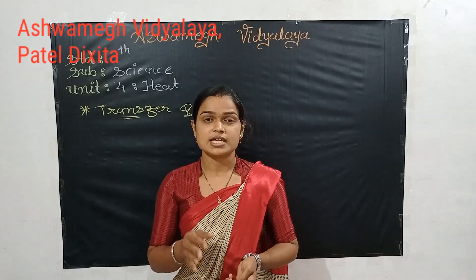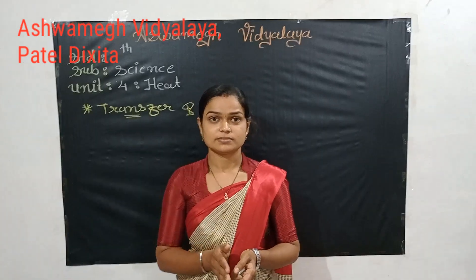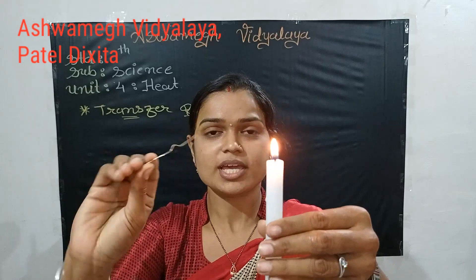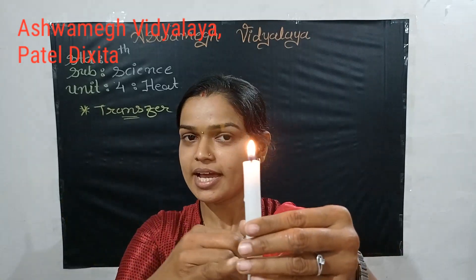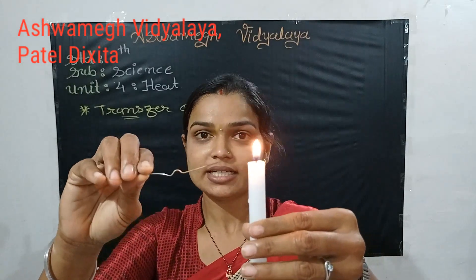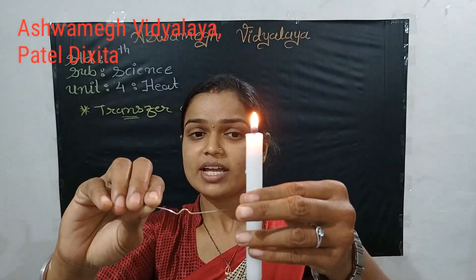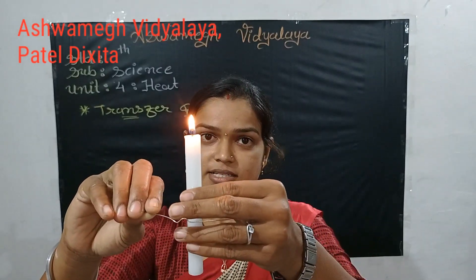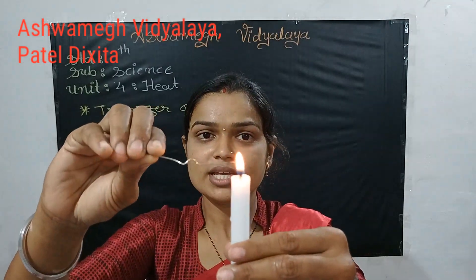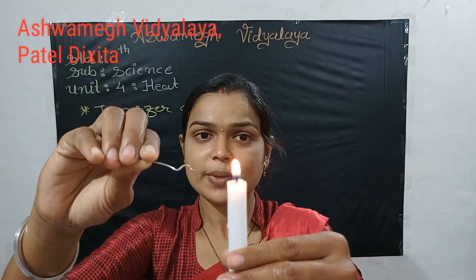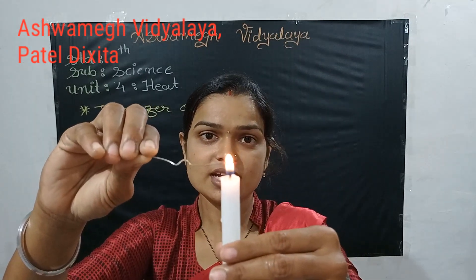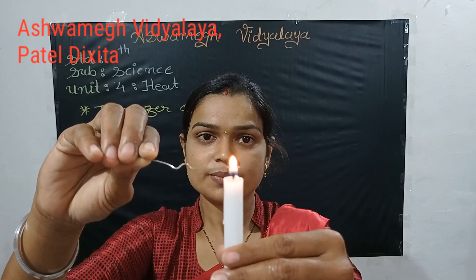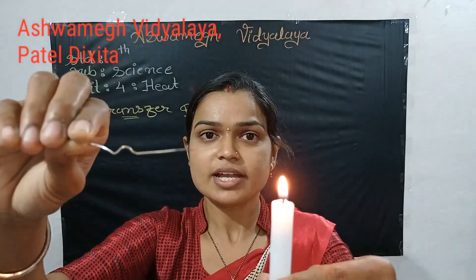Now we will see this with an activity. Look here - I have one iron rod, meaning a metal wire, and a candle. The candle transfers heat into the wire. From one end of the wire, heat travels toward the second end. As you can see, the iron wire becomes red in colour.